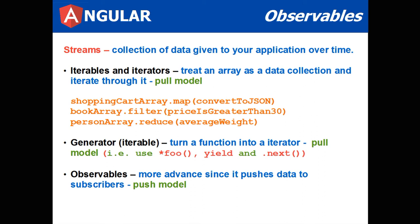Like shopping cart array dot map, you're basically iterating through the array of elements and for each element, converting it to JSON. The result is an array of JSON.